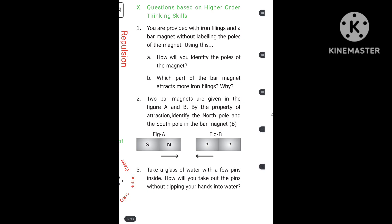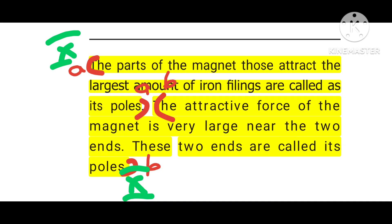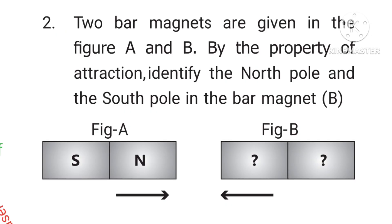Second question: Which part of the bar magnet attracts more iron filings? Why? Answer: Page number 4, last 4 lines. The attractive force of the magnet is very large near two ends. These two ends are called its poles.